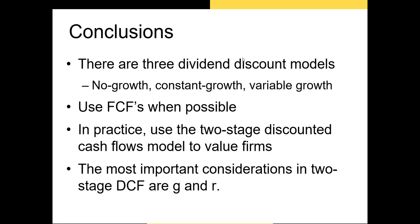Use free cash flow formulas whenever possible since they are the most accurate models available when you have complete information. In practice, use the two-stage discounted cash flows model rather than the constant growth model, because it lets you adjust the growth rate over time. The most important considerations are your long-term growth rate and your discount rate — use the most forward-looking market information for the discount rate, and estimate the terminal growth rate as accurately as possible using one of the three methods we discussed.